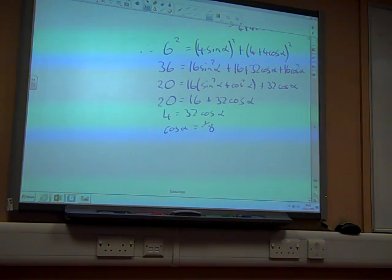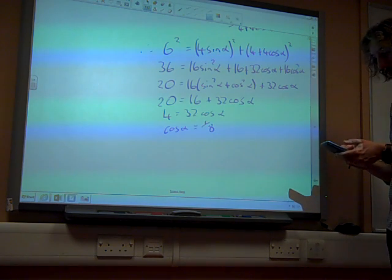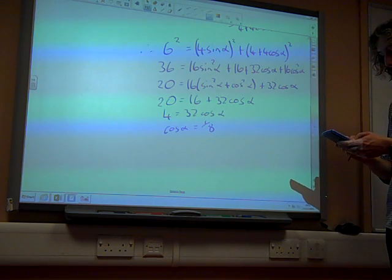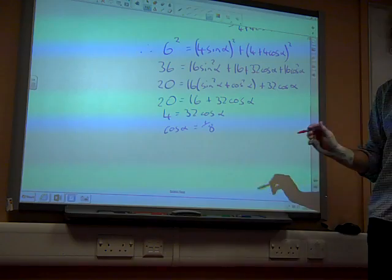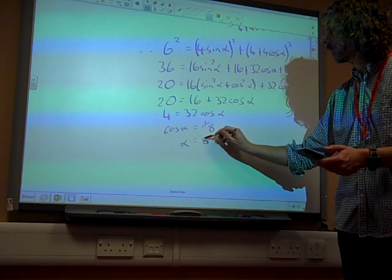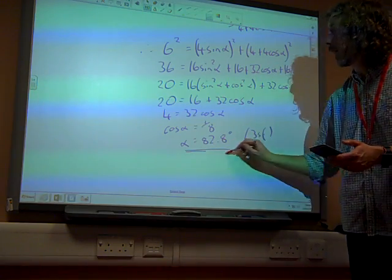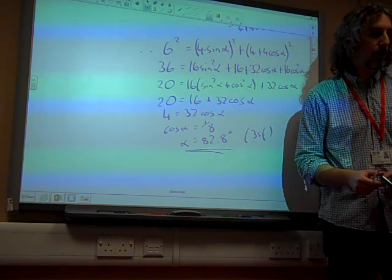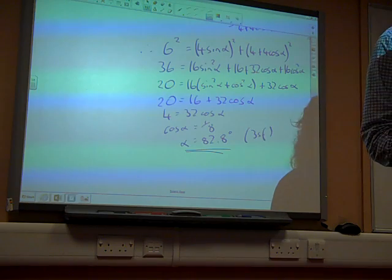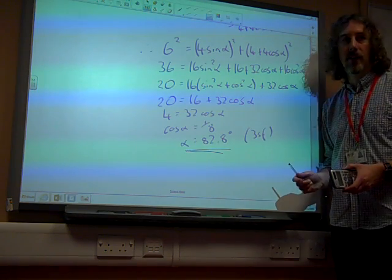If cos alpha is equal to 1 eighth, we do inverse cos 1 over 8, and we get 82.8 degrees to 3 significant figures. And there we go. That was my instinct for doing that question. That was what I did last summer.